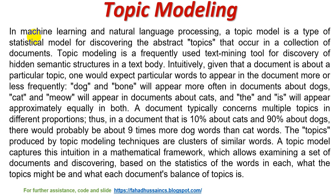Given that a document is about a particular topic — in NLP and machine learning, this is a statistical concept where we discover the topic and find text data in a collection form. One would expect particular words to appear more or less frequently: 'dog' and 'bones' will appear more often in a document about dogs, 'cat' and 'meow' will appear in a document about cats, and words like 'the' and 'is' will appear approximately equal in both.